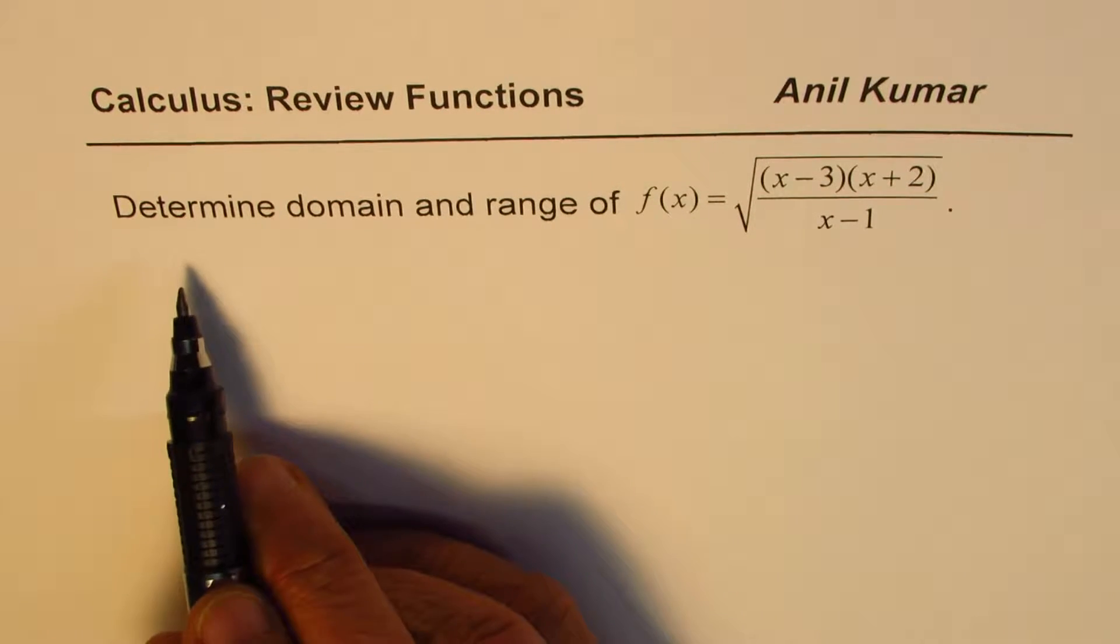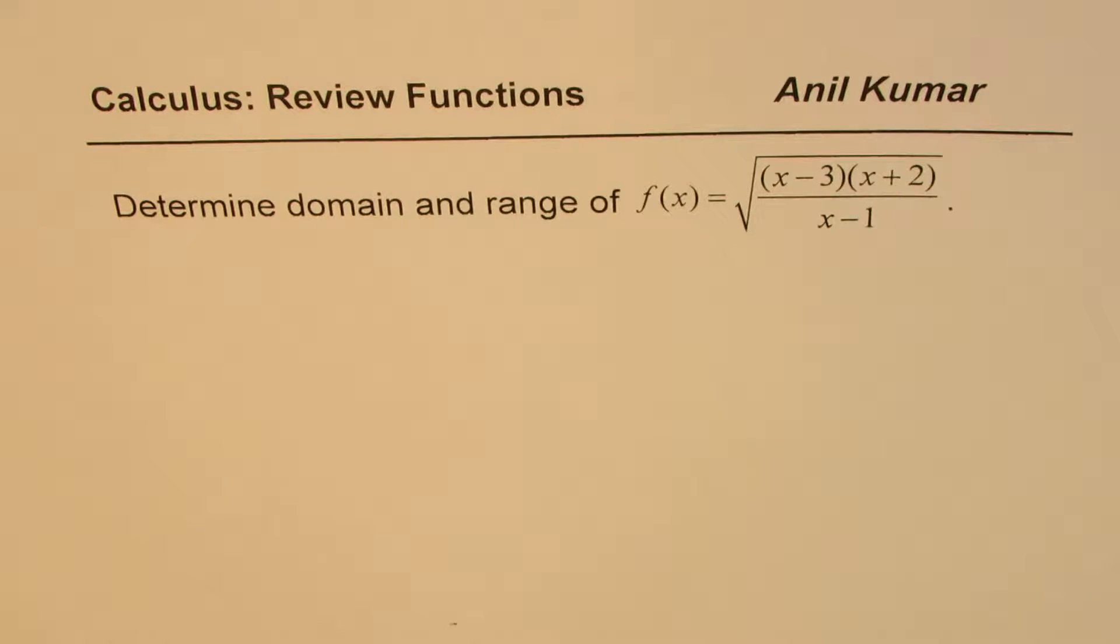I'm Anil Kumar and here is a very interesting question on domain and range of functions. This is going to help students who are taking calculus at university level or in grade 11 and 12. The question here is, determine domain and range of f of x equals square root of x minus 3 times x plus 2 divided by x minus 1. You can always pause the video, answer the question and then look into my suggestion.